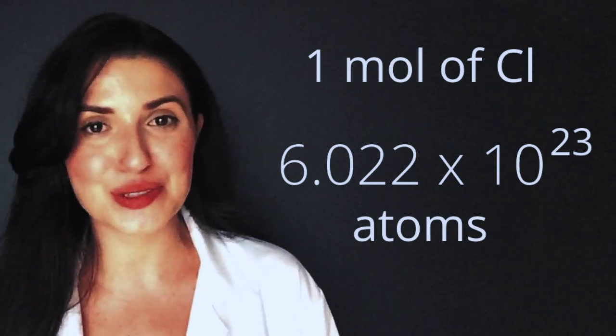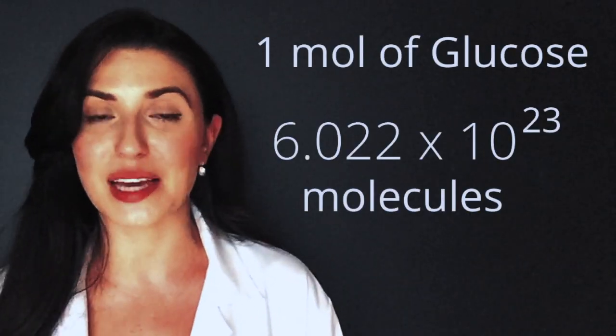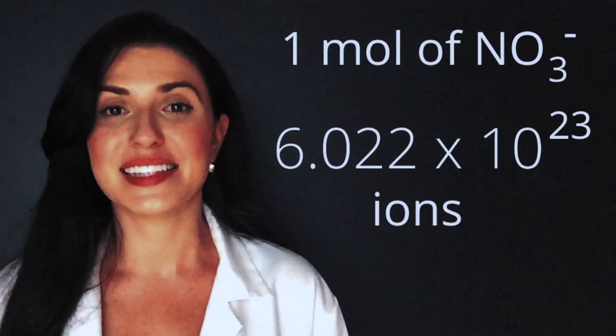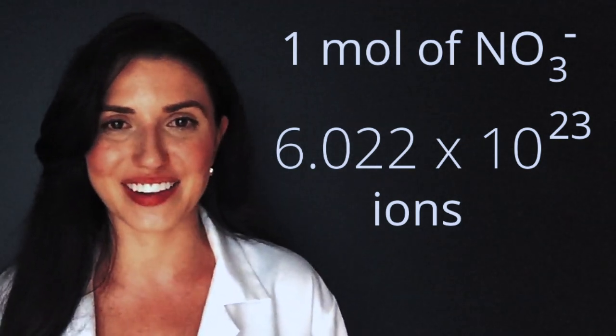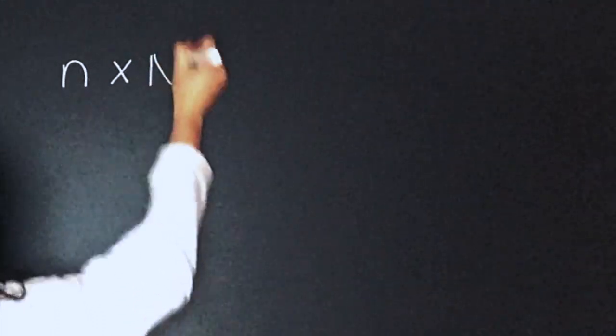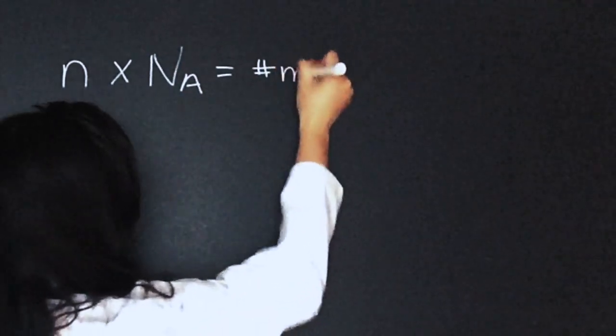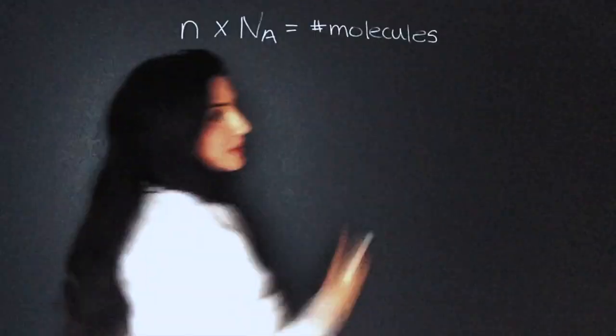This number is massive — this is 10 to the power of 13 times the population of Earth. That's literally 1 million billion times the population of Earth. Thanks to Avogadro's number, we know that 1 mole of chlorine has 6.022×10²³ atoms, 1 mole of glucose has 6.022×10²³ molecules, and 1 mole of nitrate ions has 6.022×10²³ ions. Any time we're switching from molecules to moles or moles to molecules, we use Avogadro's number.